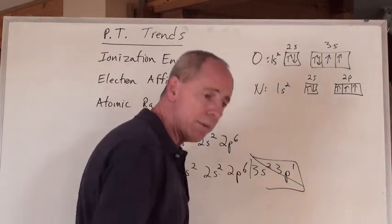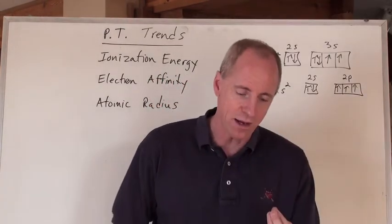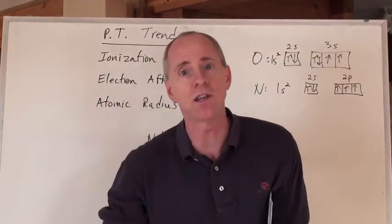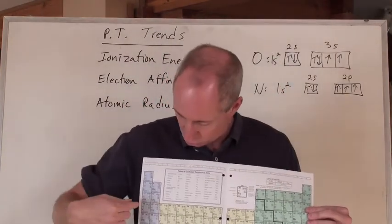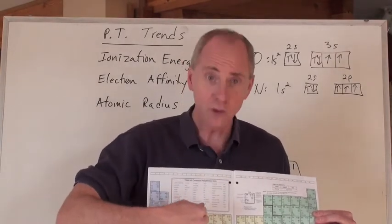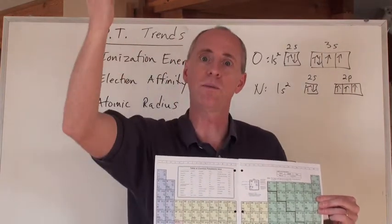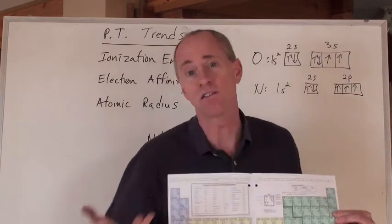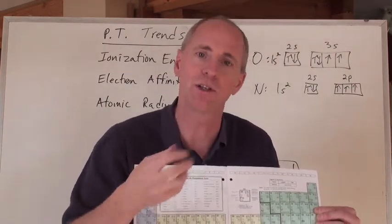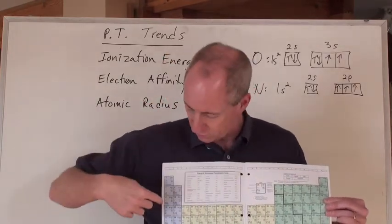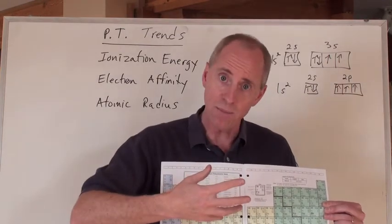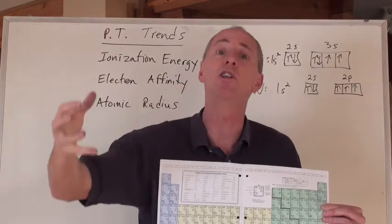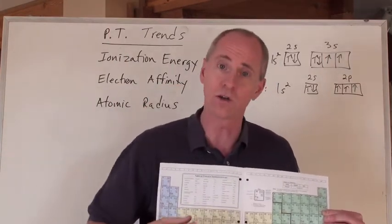Electron affinity is the ability to give an element an electron. If it requires energy to pull an electron away, then giving an electron back to an element generally releases energy. As you go across the periodic table, proton numbers increase, so there's more attraction for an incoming electron — the electron affinity increases going across, just like the ionization energy trend. The electron affinity values go up as you go across.